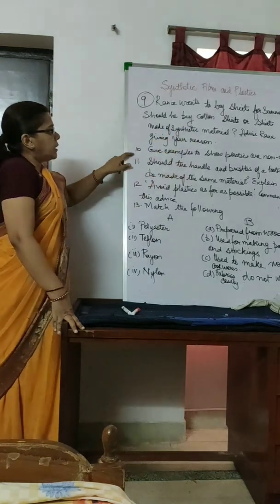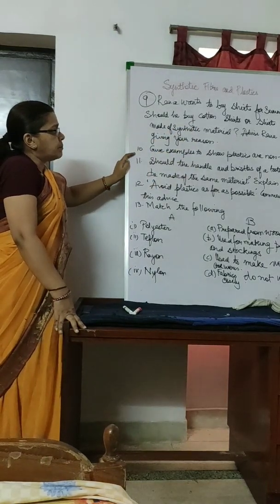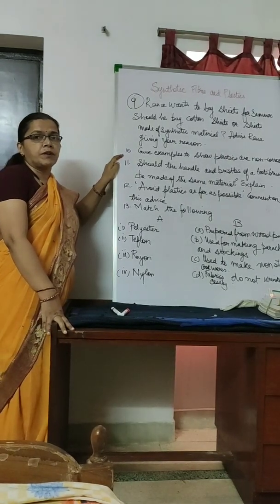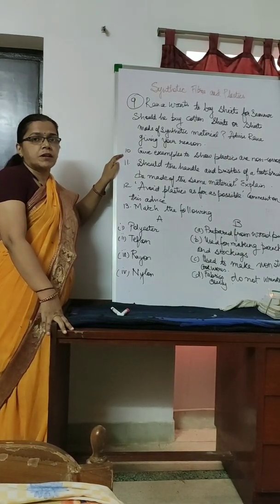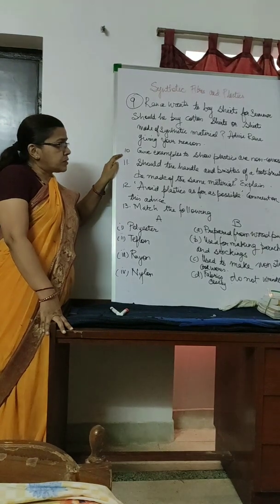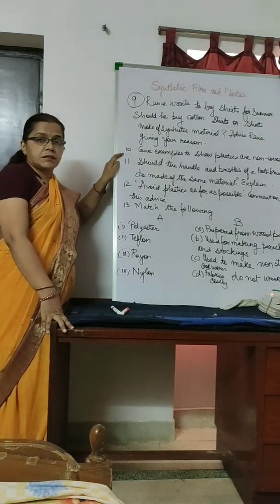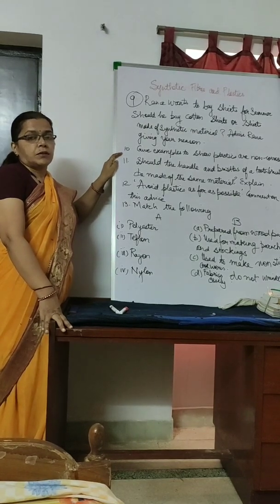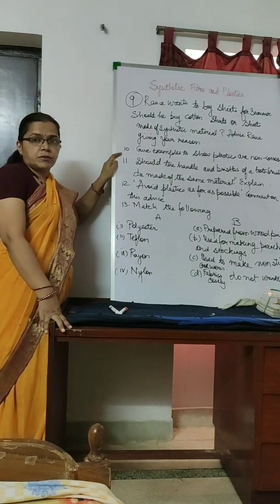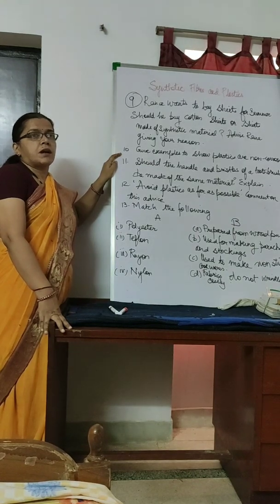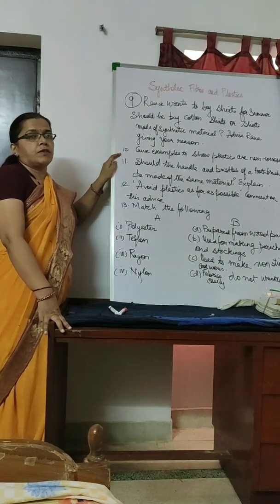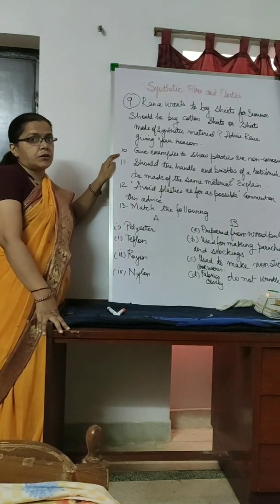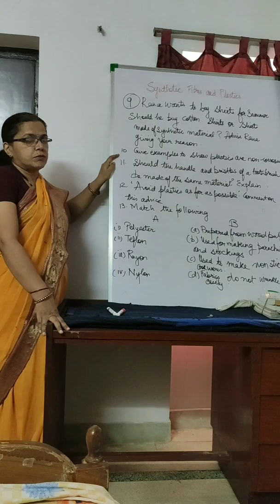Question ten: Give examples to show plastics are non-corrosive. Plastics are used for making containers to store liquids like shampoos, water, and food materials. Because plastic is non-corrosive, it does not react with the stored contents and is therefore widely used for storage.